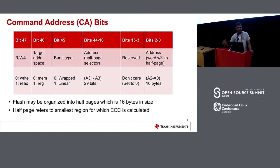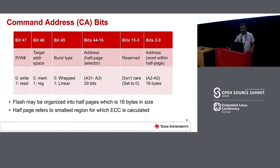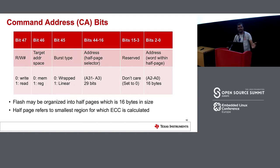To explain what happens in the command address phase and what those 48 bits represent: the 47th bit represents whether it's a read or write transaction. The 46th bit represents whether the address targets memory space or register space — this is mostly used by HyperRAM, where you would set bit 46 to one to indicate register space access; otherwise it's zero for memory space where the actual data is stored.